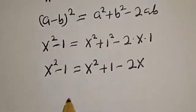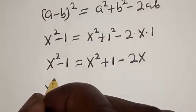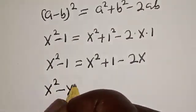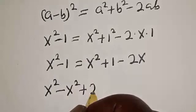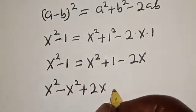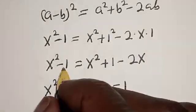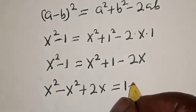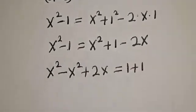Now let's collect like terms. x square minus x square plus 2x equals 1. If this minus 1, negative 1 plus 1 equals 2. So 2x equals 2.